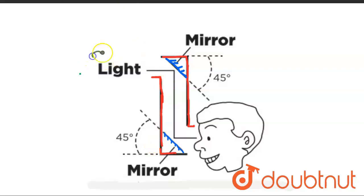Take some object—suppose this is a tree. Light rays travel from the tree, reflect from this mirror like this, then reflect from another mirror, and then go to the eyes of the person.